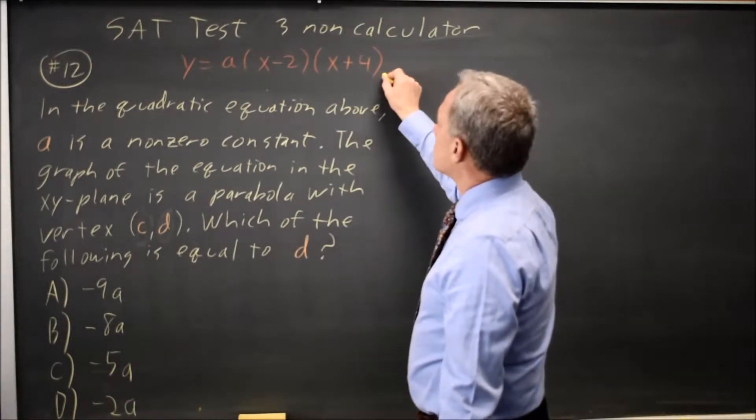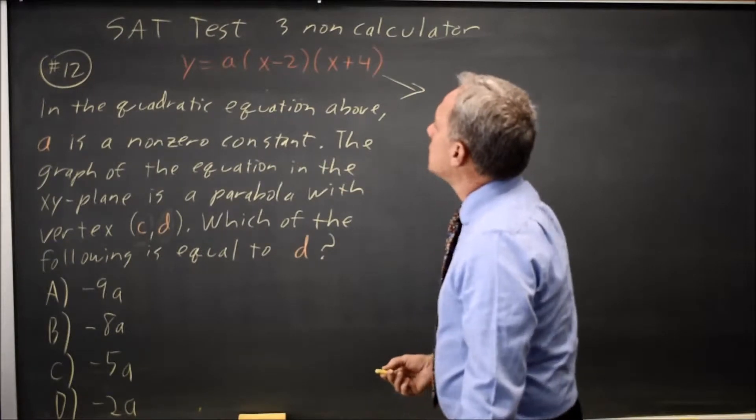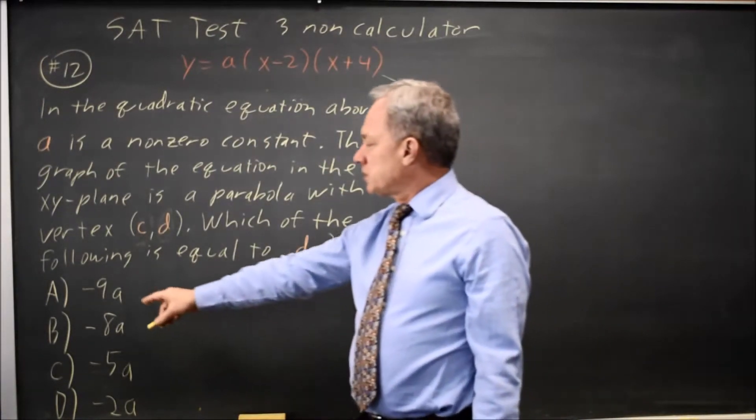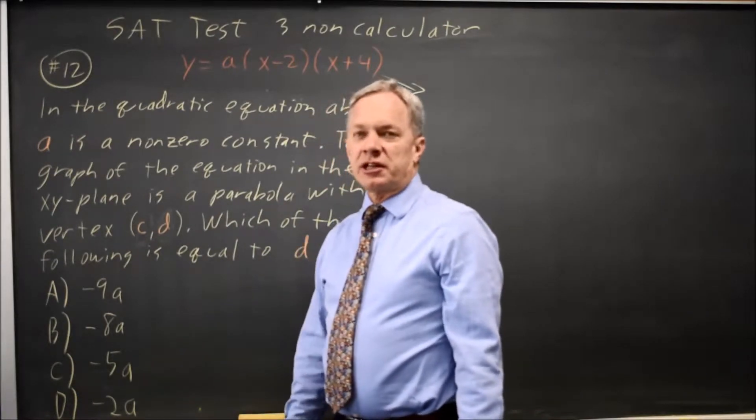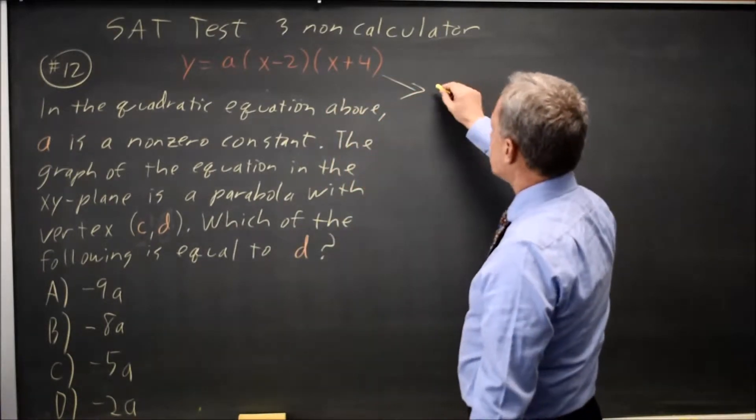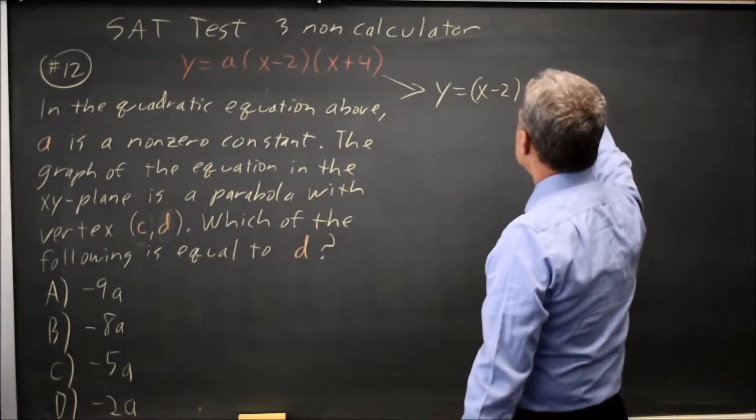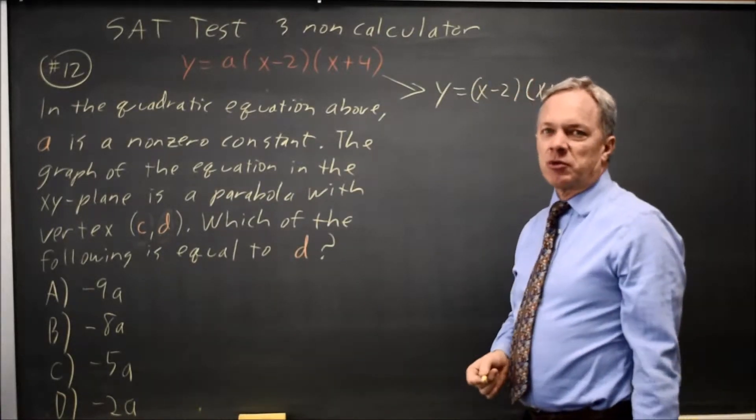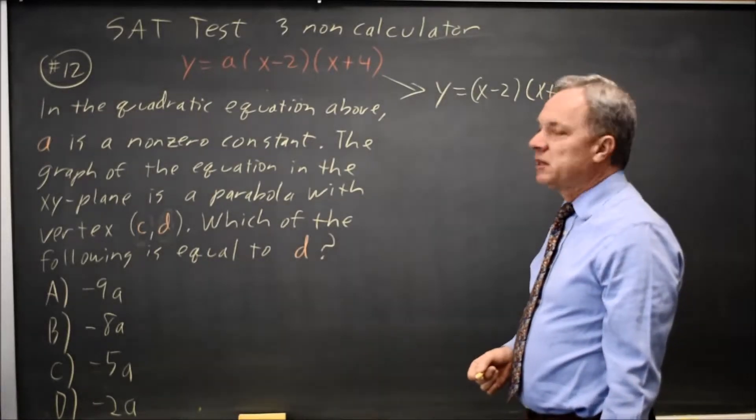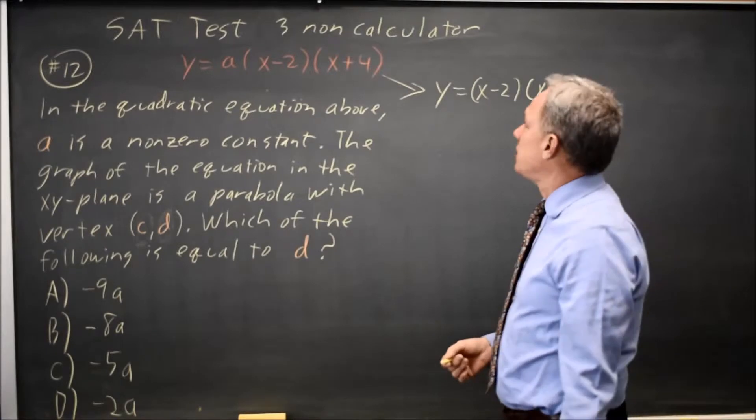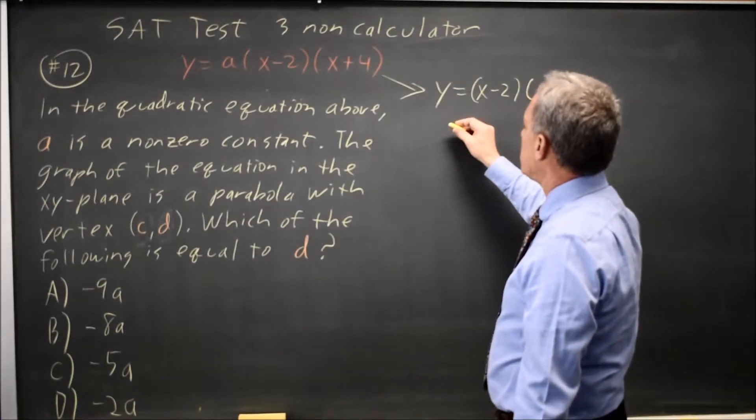In this case, we want to find the vertex, and one thing I can do, since a equals 1 gives me different answers in each case, I could simply rewrite it as y equals (x minus 2)(x plus 4). The correct answer for a equals 1 will be the correct answer for all a, and I'm going to do that. It's not significantly more work if I leave a in there, but it's easy to think about here.